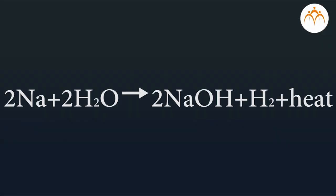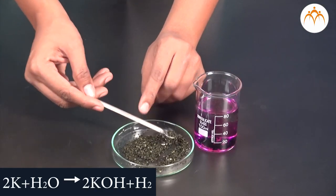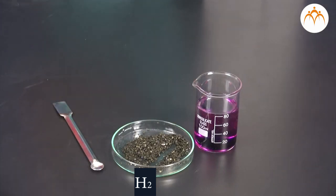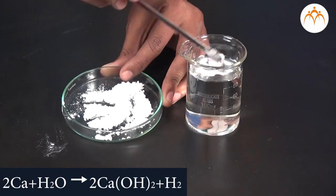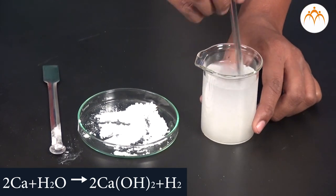Sodium and potassium react rapidly and vigorously with water and liberate hydrogen gas. On the other hand, calcium reacts with water slowly. 2Na plus 2H2O gives 2NaOH plus H2 plus heat. 2K plus H2O gives 2KOH plus H2. Ca plus 2H2O gives Ca(OH)2 plus H2.